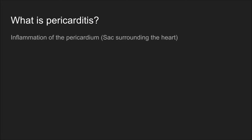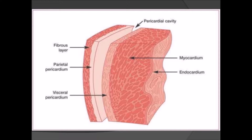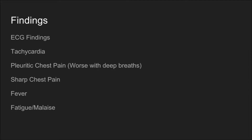Let's talk about pericarditis. What is it? It's an inflammation of the pericardium, the sac surrounding the heart. So what do we see when we have a patient with pericarditis? We're going to see some EKG findings, which we'll go over more in depth in a minute. They're usually tachycardic, and they'll have pleuritic chest pain, which means every time they take a deep breath the pain is worse.